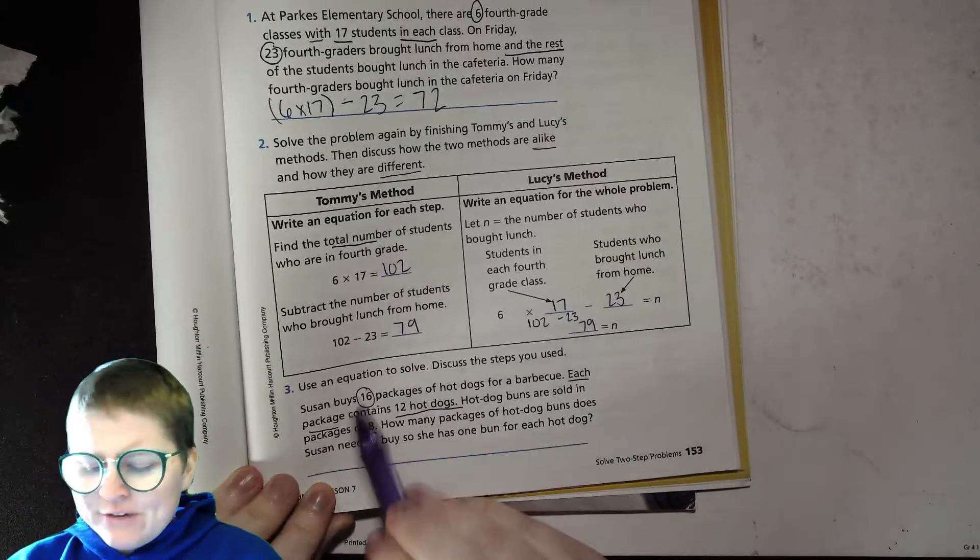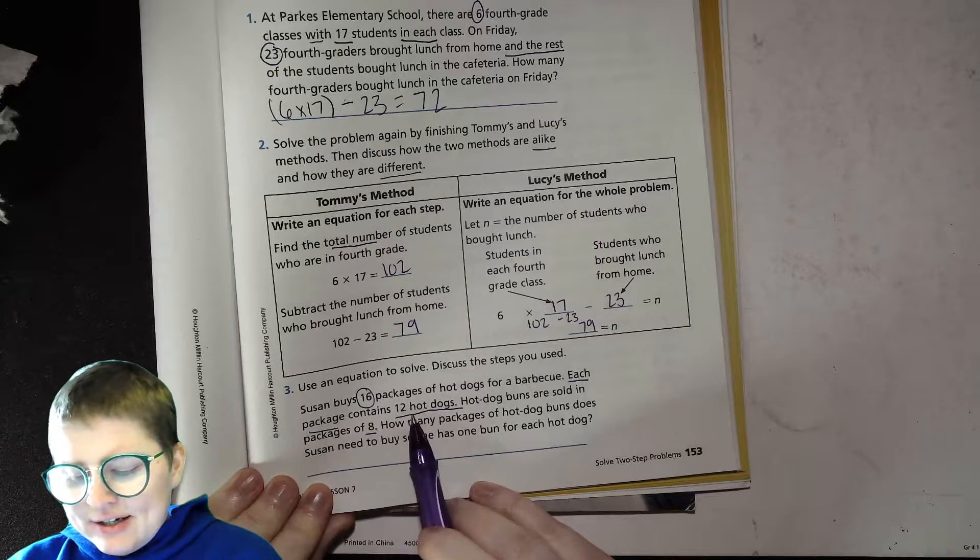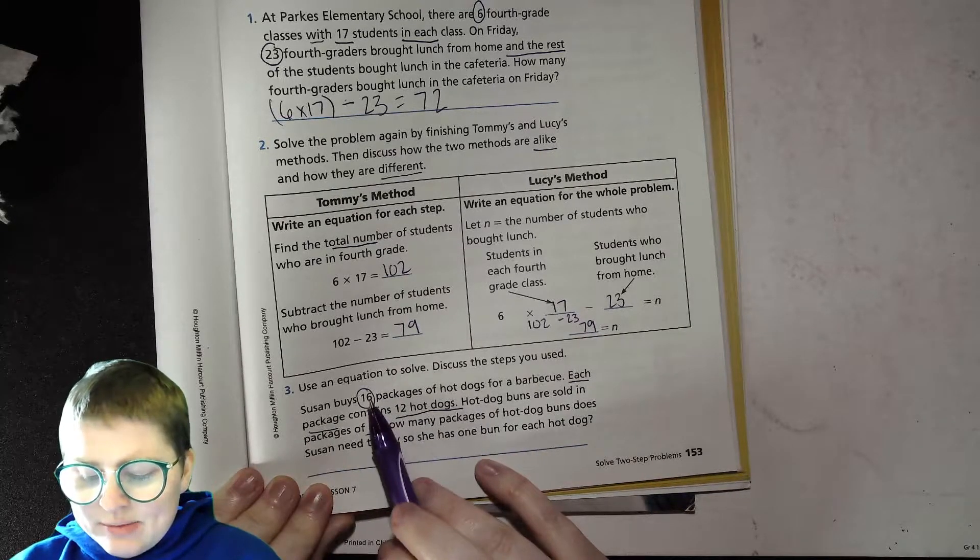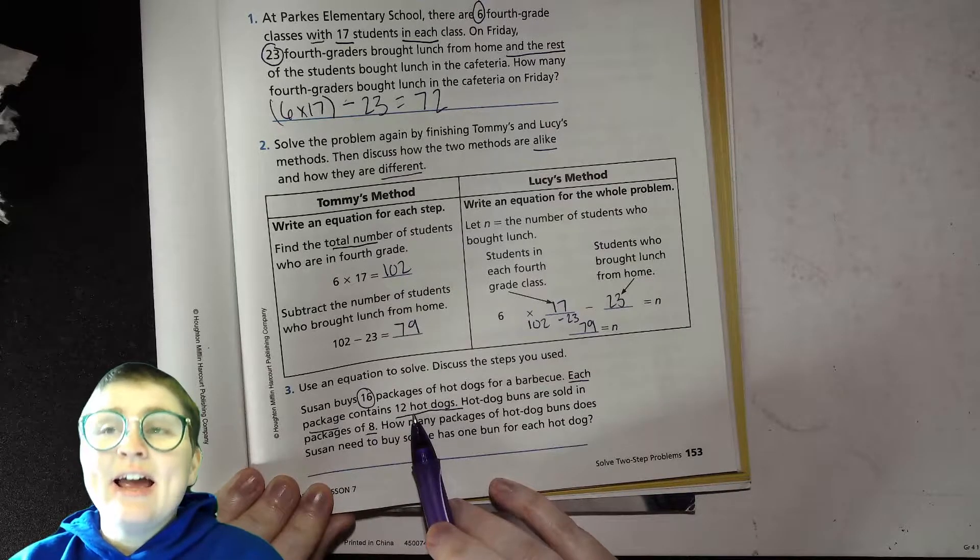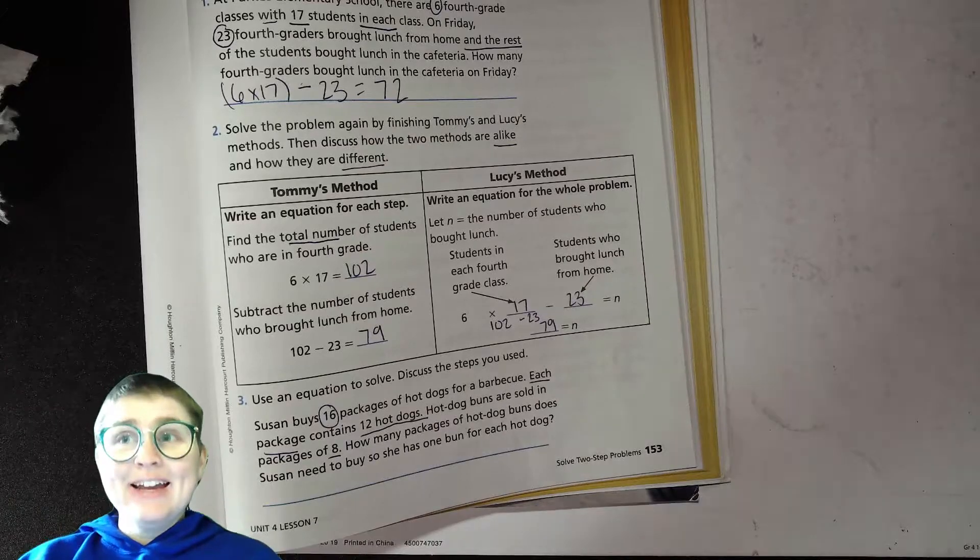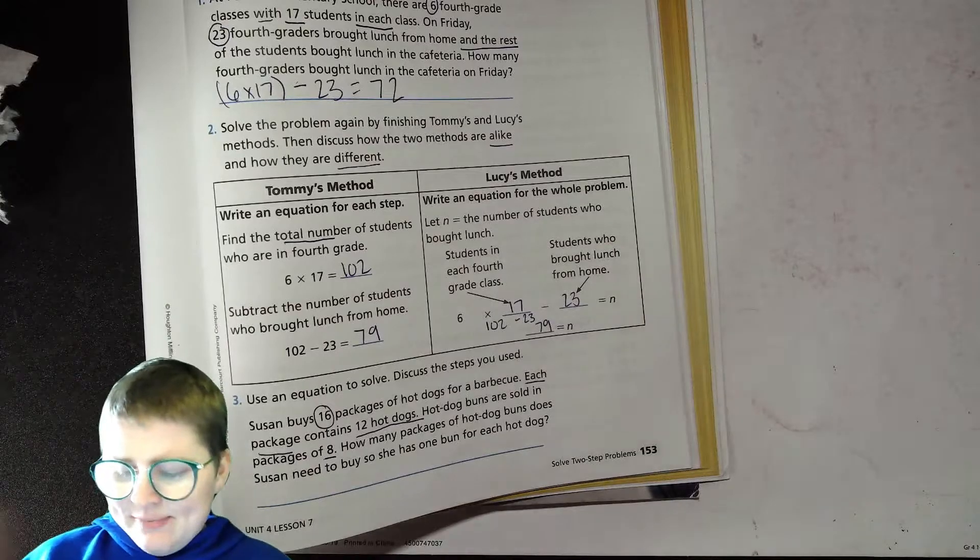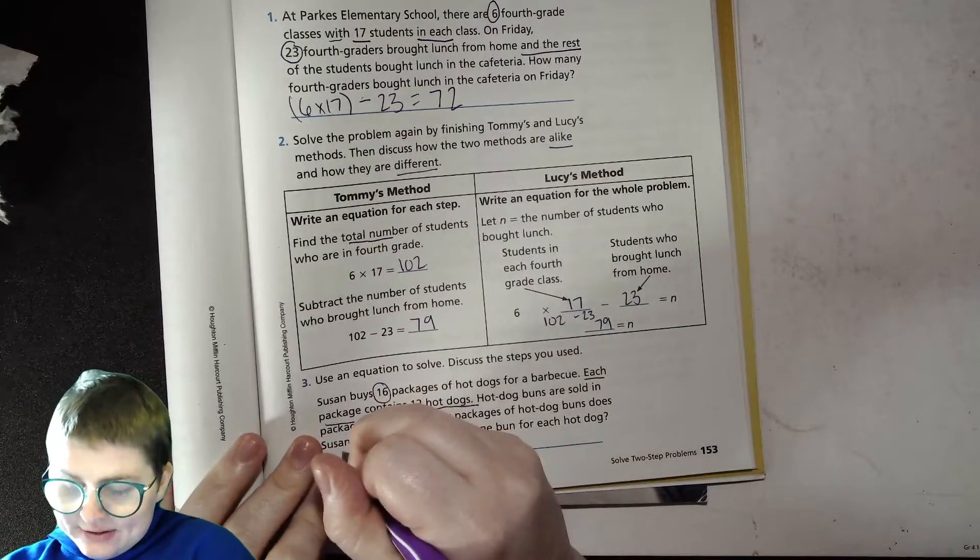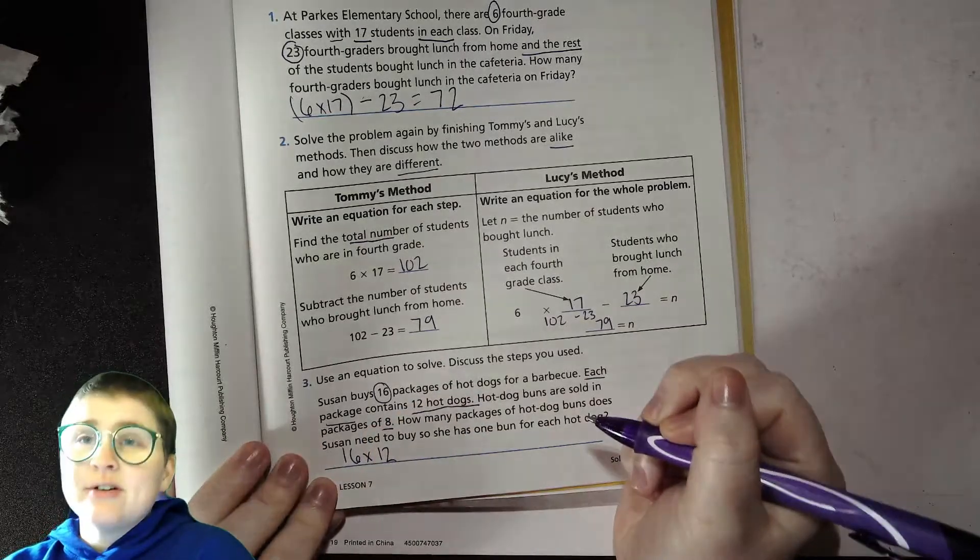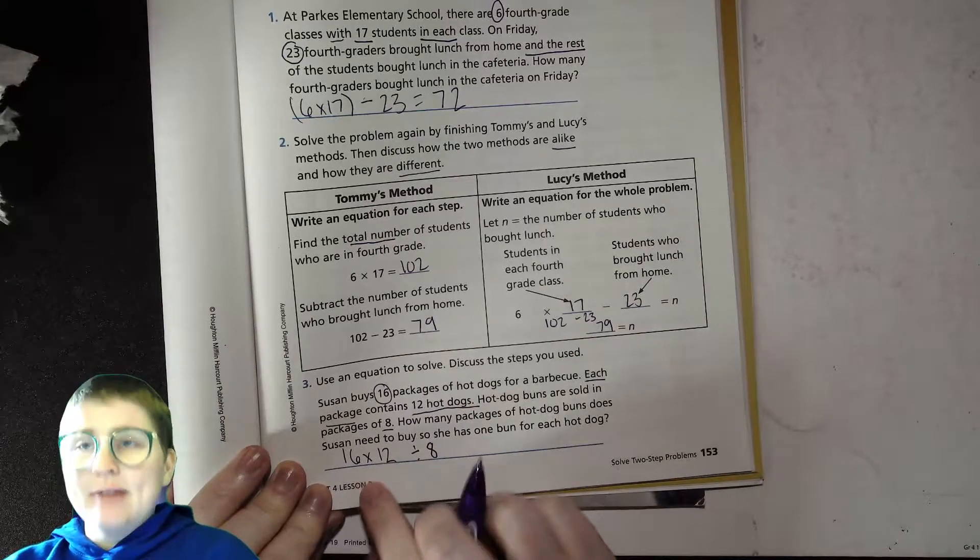How many packages of hot dog buns does Susan need to buy so she will have one bun for each hot dog? The hot dog bun industry trying to get you to buy more packages doesn't line up with the number of hot dogs. So first we need to figure out how many hot dogs she has. So that'll be our 16 times our 12s. And then we're going to figure out how many groups of eight there are in that number so we can buy the right number of buns. So that looks like first 16 times 12 and then divided by eight.